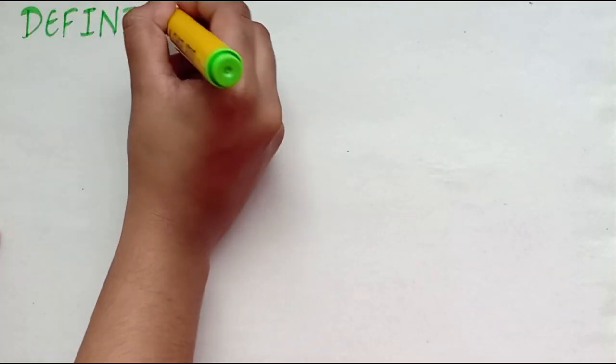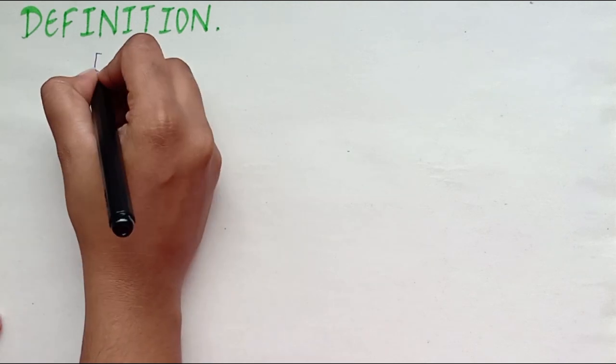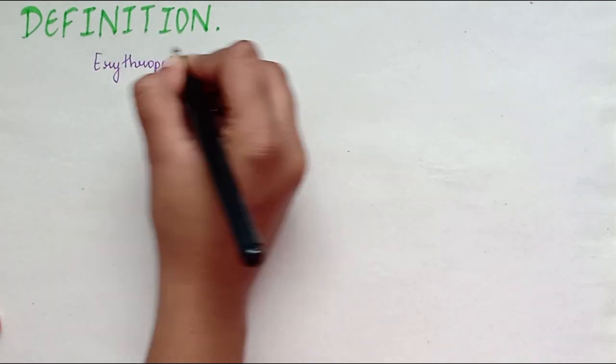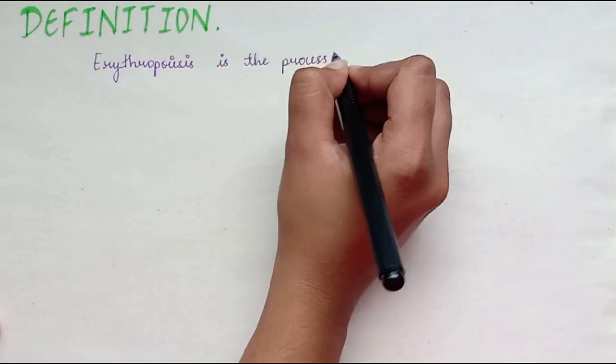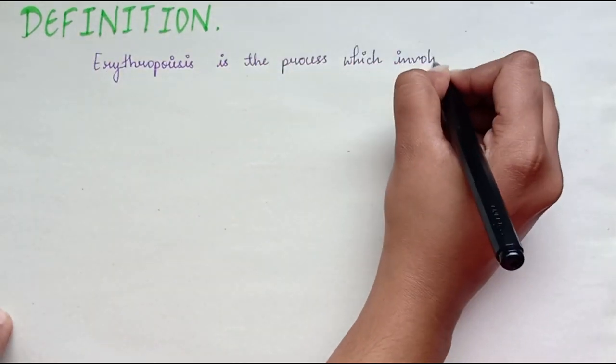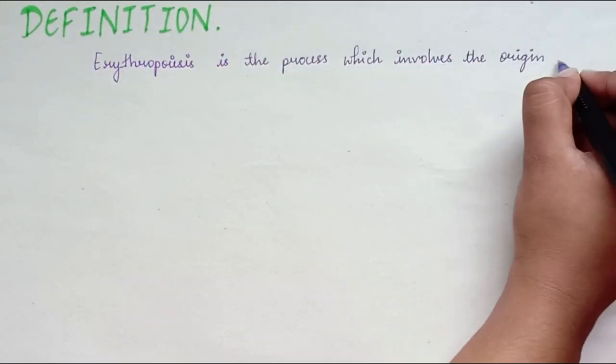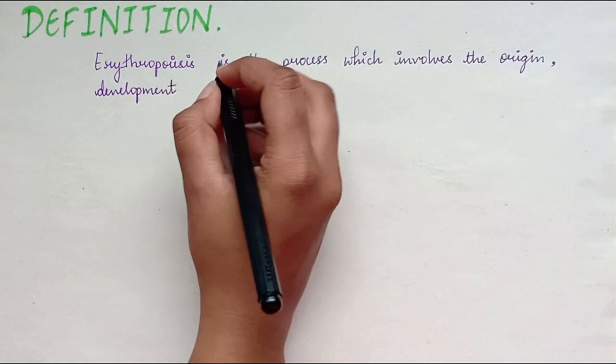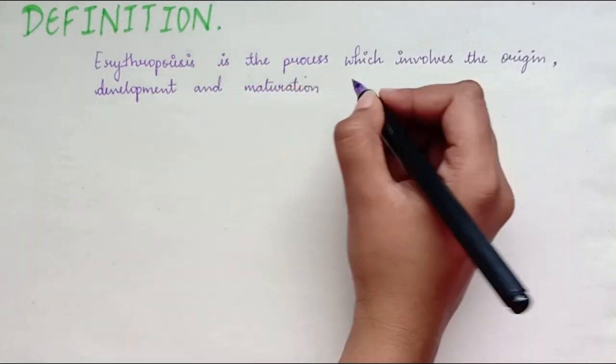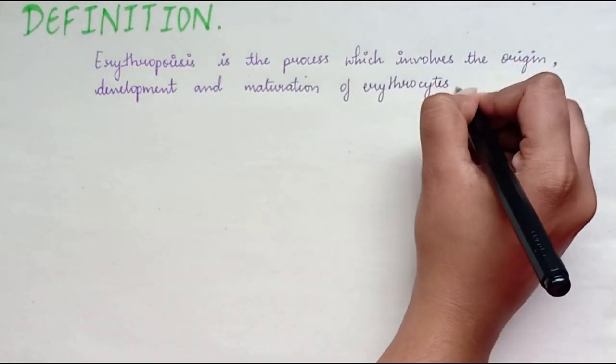Erythropoiesis. Definition: Erythropoiesis is the process which involves the origin, development and maturation of erythrocytes.